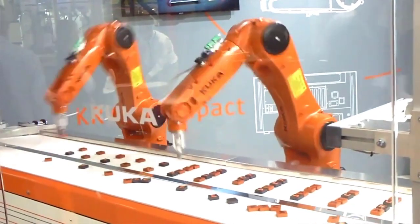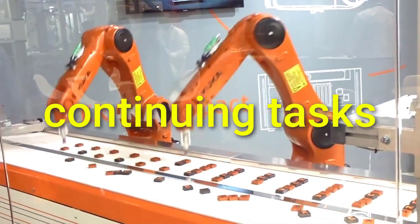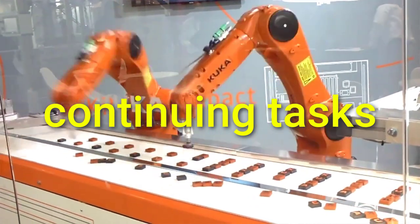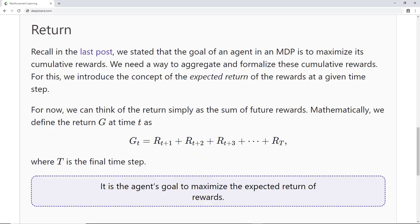Now, formally, tasks with episodes are called episodic tasks. There exist other types of tasks, though, where the agent-environment interactions don't break up naturally into episodes, but instead continue without limit. These types of tasks are called continuing tasks. Can you think of any examples of continuing tasks? Let me know in the comments. Continuing tasks make our definition of the return at each time T problematic because our final time step, big T, would be equal to infinity, and therefore the return itself could be infinite. Because of this, we need to refine the way we're working with the return.